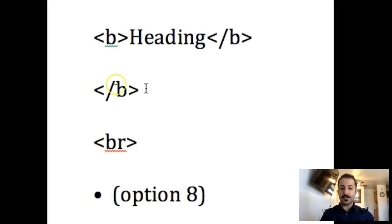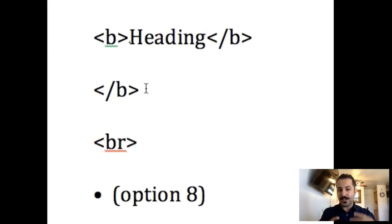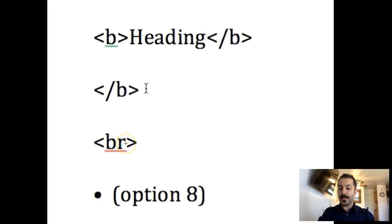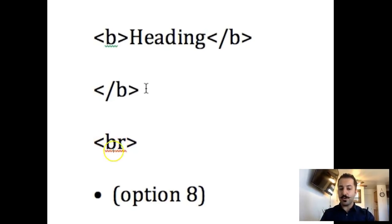The second most important thing you need to know is the break tag: shift comma, B, R, shift period — which gives you a line break, a space. So every time you need a space or a line break, this is what you do. And every time you want to create a bullet point, you do option eight — that's if you have a Mac.